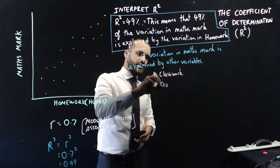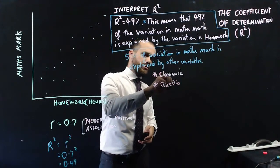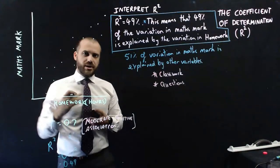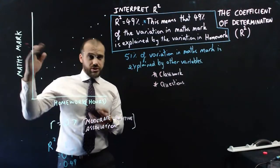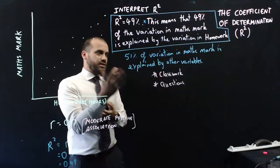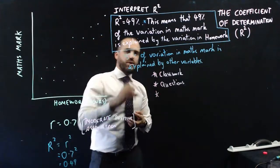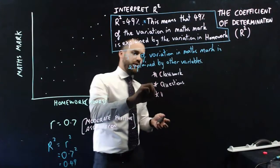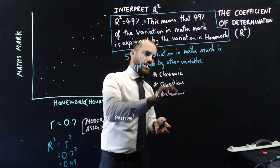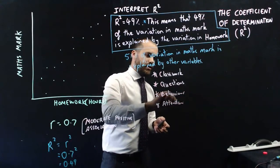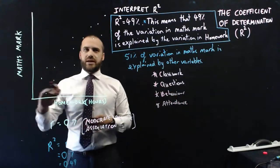A big one for me in my class is Questions. Students who ask a lot of questions tend to get higher MathsMarks. People who don't ask a lot of questions tend to get lower MathsMark. So that's another variable that can help to explain the MathsMark. What else might explain the MathsMark? Maybe like Behaviour. Maybe like Attendance. There could be a bunch of variables that affect your MathsMark.